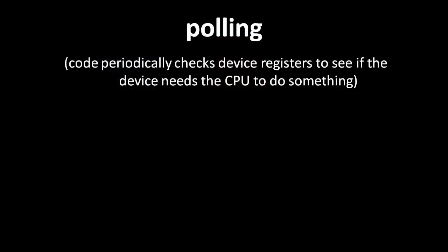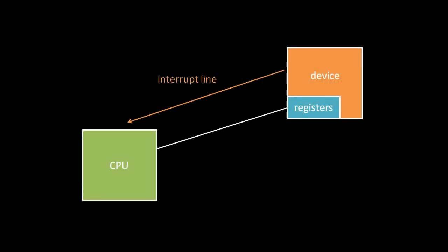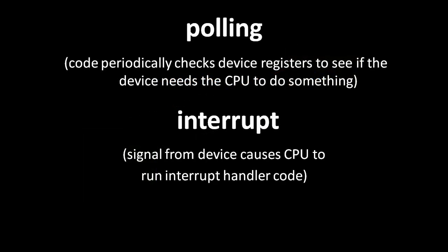As an I/O device operates, it may periodically want attention from code running on the CPU. The simplest strategy is called polling, in which the code on the CPU periodically checks the device registers to see if the device wants attention. The obvious problem with polling is that these periodic checks waste the CPU's time when the device needs no attention, so far better if the device could directly notify the CPU when it needs attention — which is the idea behind interrupts. An interrupt line is a circuit path running from the device to the CPU over which the device can signal that it wants attention. When receiving this signal, the CPU temporarily sets aside what it's doing to run the interrupt handler — a piece of operating system code associated with that interrupt line.